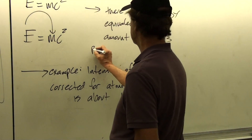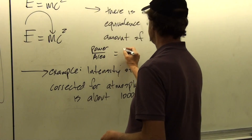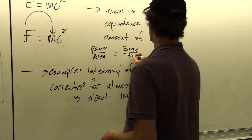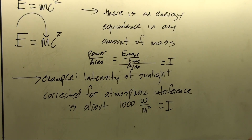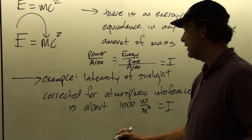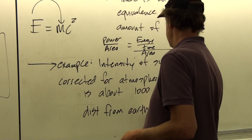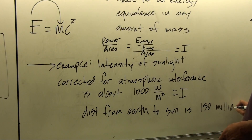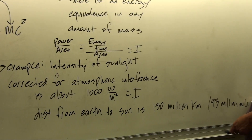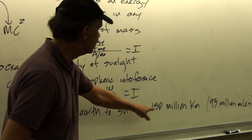When we say intensity, that's what we mean — power per area, or energy per unit time per unit area. From this information and also from the fact that the distance from the Earth to the Sun is 150 million kilometers, or 93 million miles on average — there's a 2% variation but it averages to 93 million miles — let's find the amount of mass being turned into energy in the Sun every second.